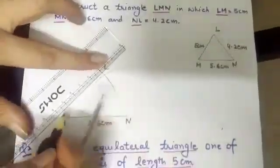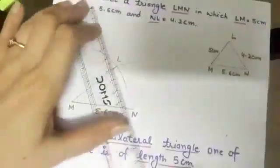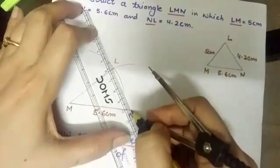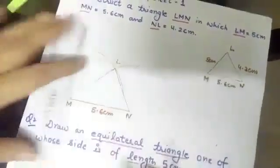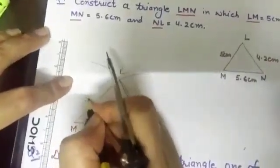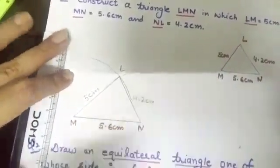Now, we got the point L. Join LM and LN. LM is 5 cm and NL is 4.2 cm. Now, the next question.